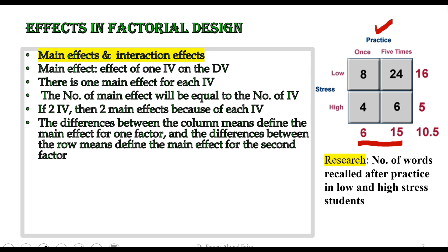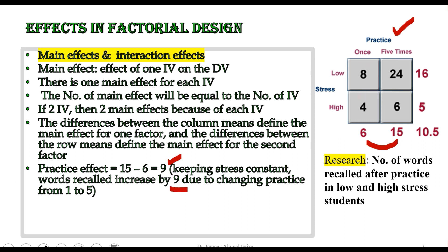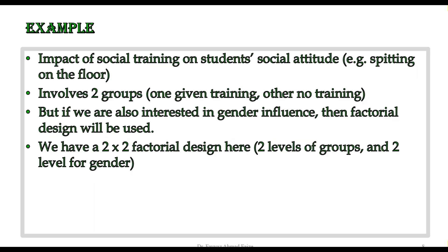Looking at the rows, stress is the second independent variable. The mean for the first row and the mean for the second row are compared — the difference gives the main effect due to stress. Keeping stress constant, words recalled increase by 9 due to changing practice from 1 to 5. For stress, the mean of the dependent variable changes from 16 to 5 when stress changes from low to high, a difference of 11.